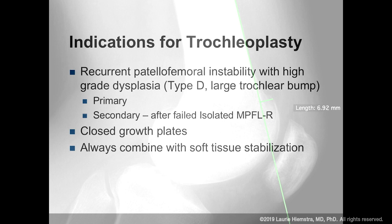My indications for trochleoplasty would be a recurrent dislocator that has high-grade dysplasia — that might be type B or type D depending on which classification system you use — or a large trochlear bump. I do lots of primary trochleoplasty, but also secondary where they fail. Growth plates do need to be closed or close to closing, and I always combine it with an MPFL reconstruction.